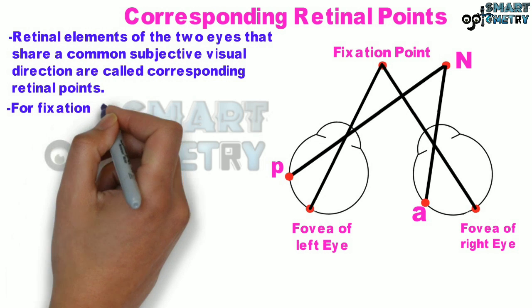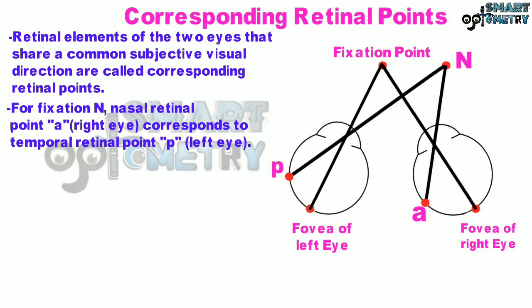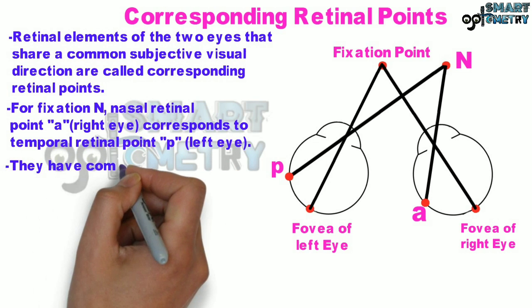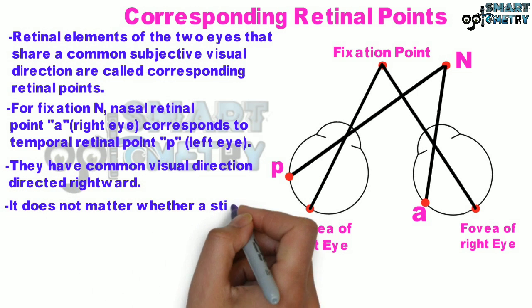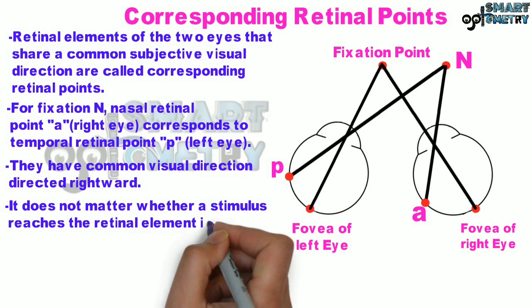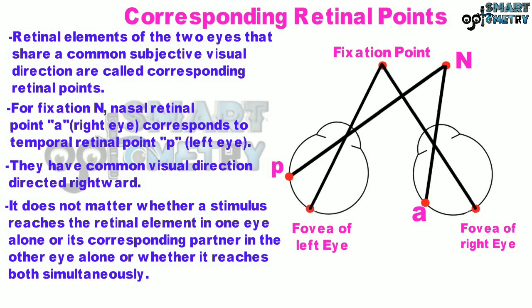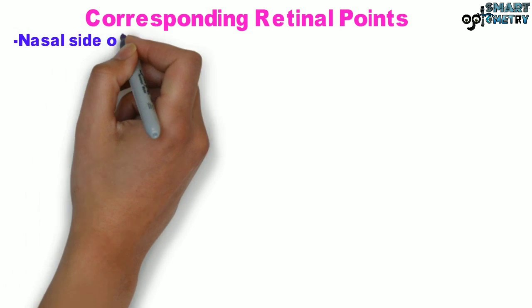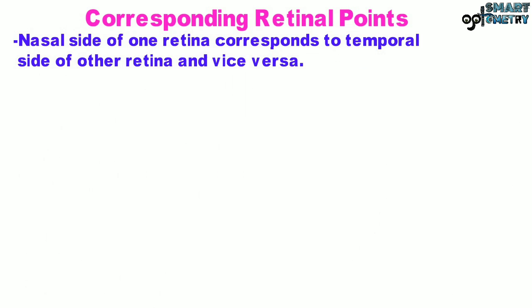So, for the fixation point N, nasal retinal point A in the right eye corresponds to the temporal retinal point P in the left eye. They have a common visual direction directed rightward. It does not matter whether a stimulus reaches the retinal element in one eye alone or its corresponding partner in the other eye alone, or whether it reaches both simultaneously. Nasal side of one retina corresponds to the temporal side of the other retina and vice versa.